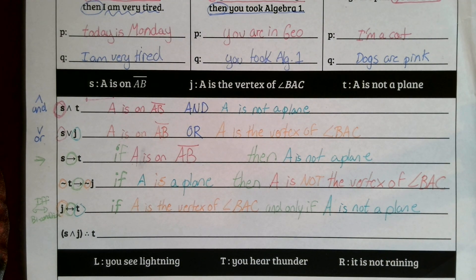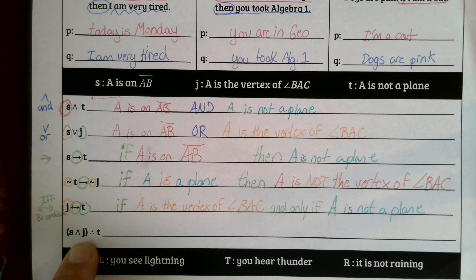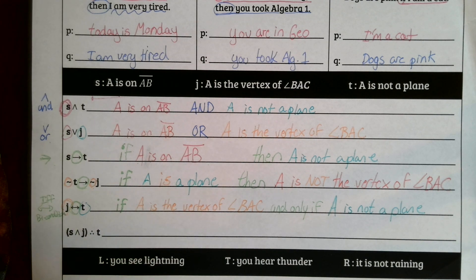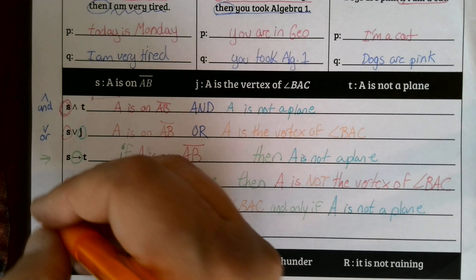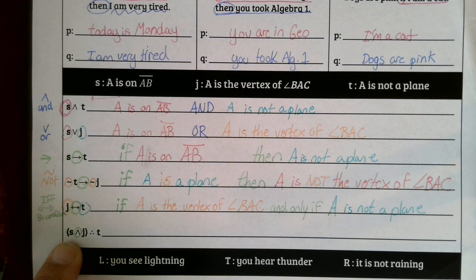Are you ready for one that looks a little different — putting a little bit more together? This is going to be a combined two statements that then draws a conclusion. Do you see how it has parentheses around those? That means those two statements go together. We'll start with S, and it's got an 'and' in it. We're working with an 'and,' which means we're connecting. S, which is 'A is on AB,' is where we'll start. We don't need an if-then because it doesn't have an arrow. So: 'A is on AB.'